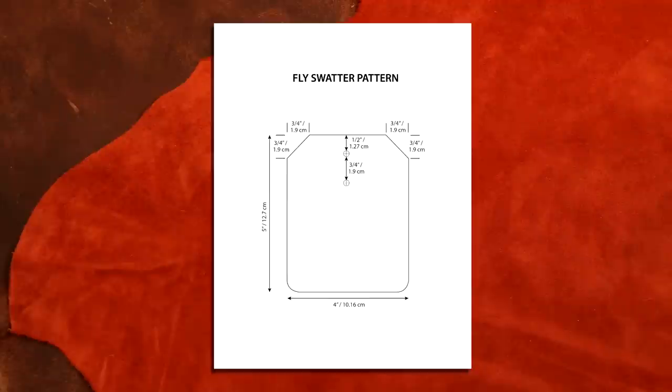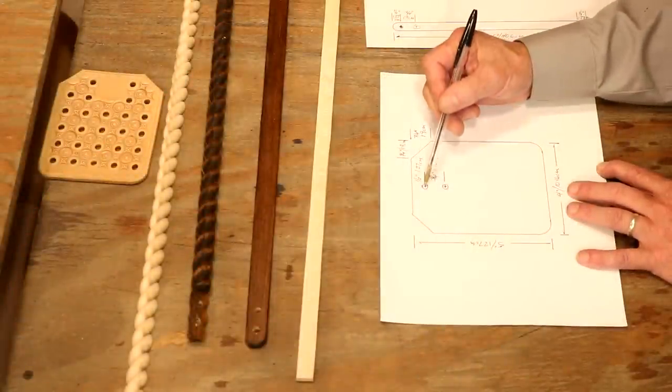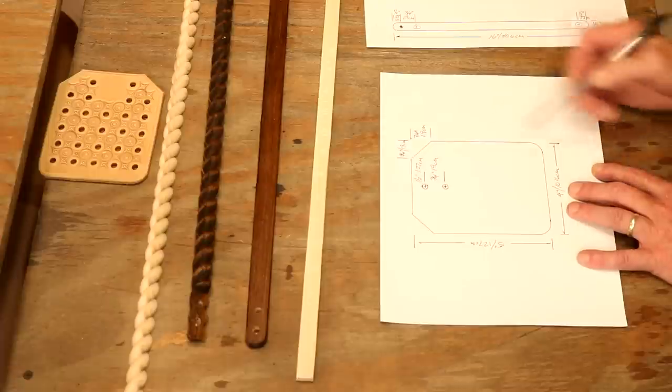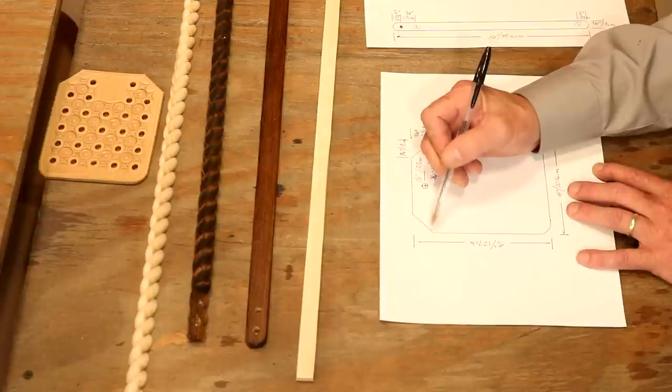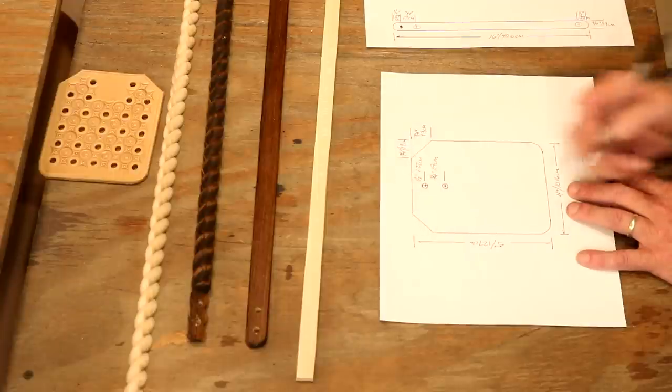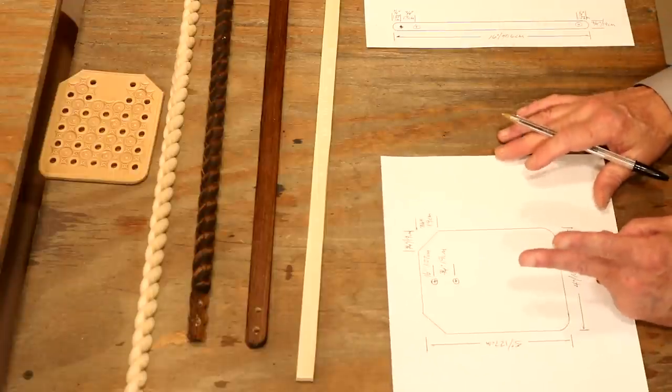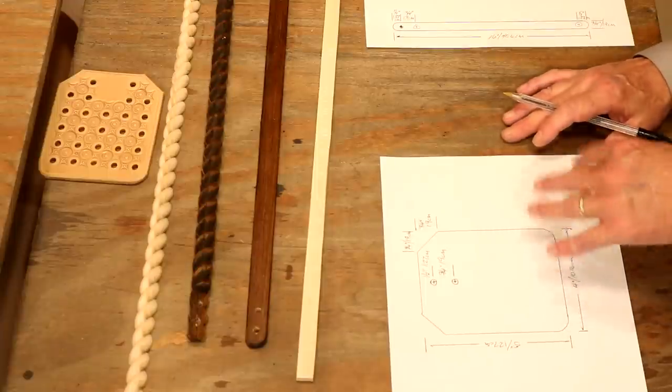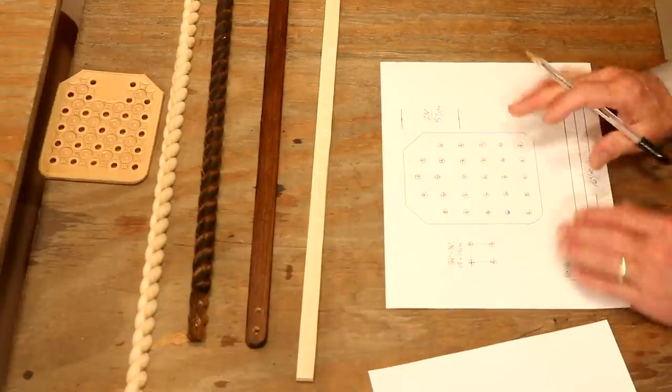On our center line up at the top, we've got two holes. This is where we're going to connect this to our stick. I'm going to come down one half of an inch, 1.27 centimeters, and give that a three quarter inch spread, 1.9 centimeters. On my corners, I've come in three quarters of an inch from either side and just cut across.